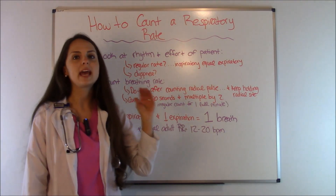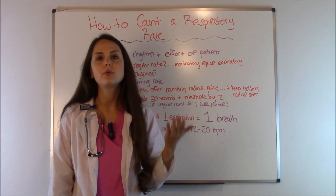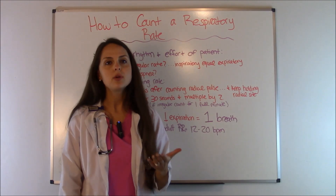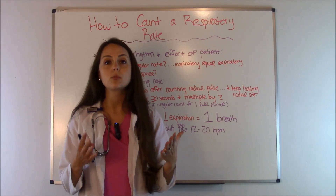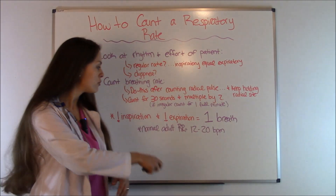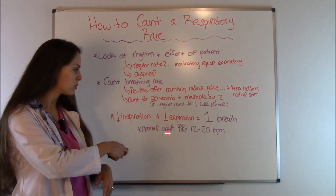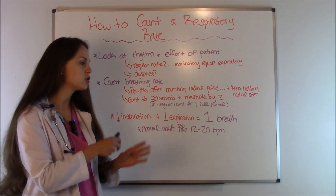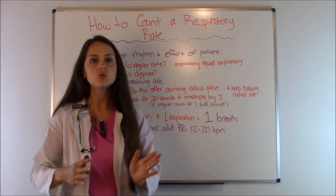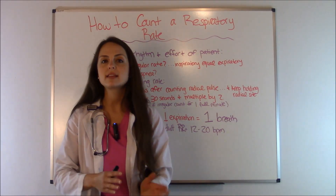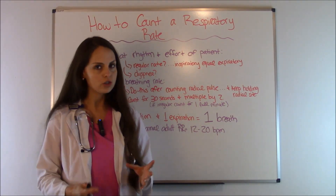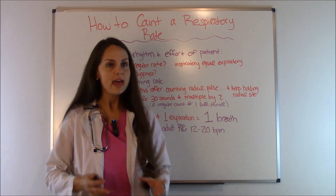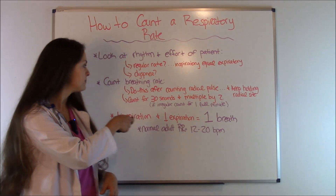Next, you want to count the breathing rate and make sure that it is within the normal range. For an adult, a normal range is 12 to 20 breaths per minute. So we're making sure that they meet that criteria.